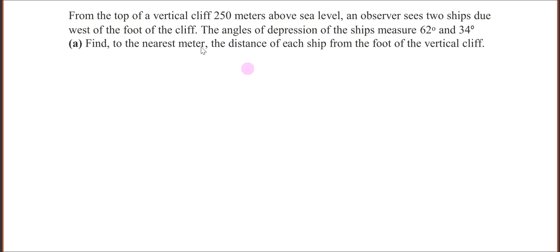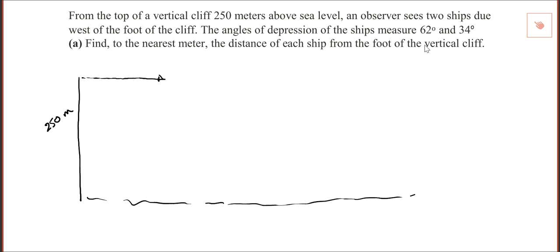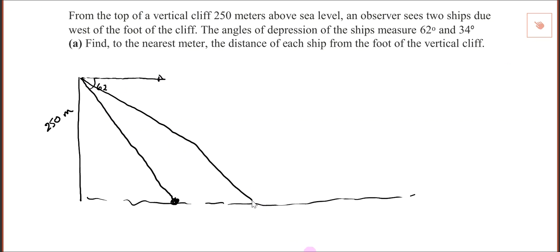From the top of a vertical cliff 250 metres above sea level, there are two ships west of the foot of the cliff. Angles of depression — when you do angles of depression, remember you're at the top and look out, and it's how far you look down. The angles of depression of the ships are 62 degrees and 34 degrees.